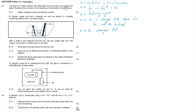Question 8.2: A galvanic cell is constructed using an iron/Fe³⁺ half-cell and a copper/Cu²⁺ half-cell. Question 8.2.1 asks for the overall net cell reaction when the cell is functioning. Since this is a galvanic cell, the reaction must occur spontaneously.